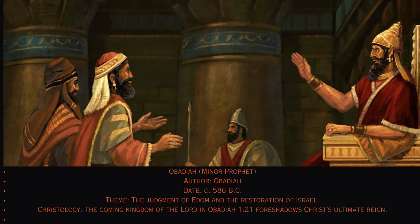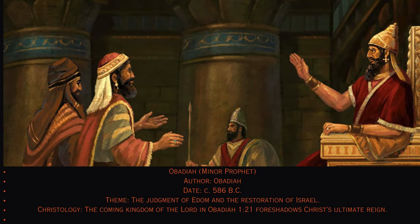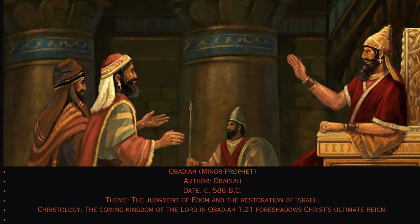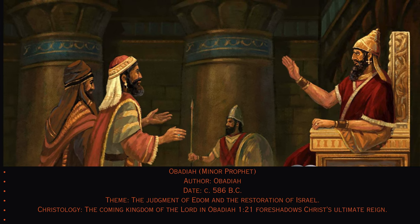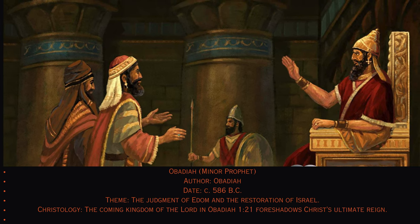31. Obadiah. Minor prophet. Author: Obadiah, circa 586 B.C. Theme: The judgment of Edom and the restoration of Israel. Christology: The coming kingdom of the Lord in Obadiah 1:21 foreshadows Christ's ultimate reign.